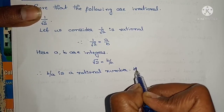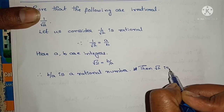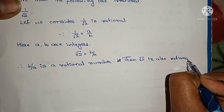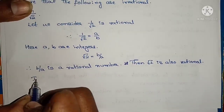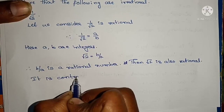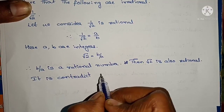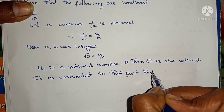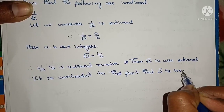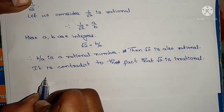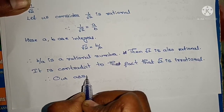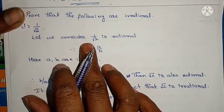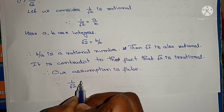Therefore root 2 would also be rational. But root 2 is irrational — this contradicts the fact that root 2 is irrational. Therefore our assumption is false, and 1/√2 is irrational.